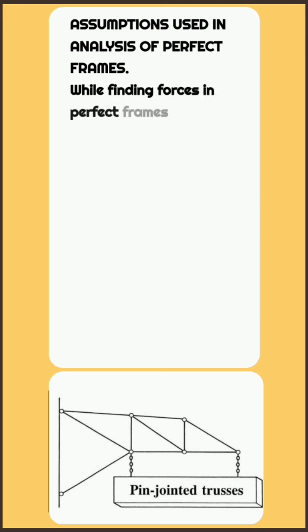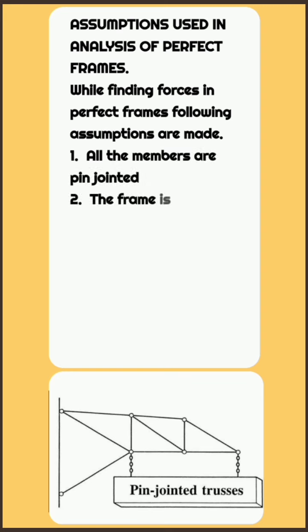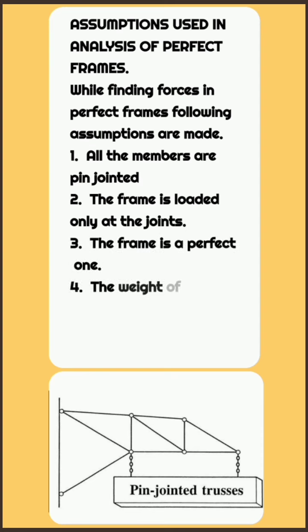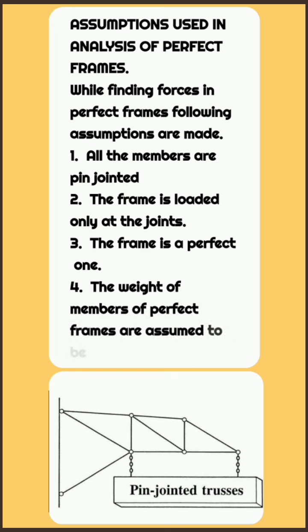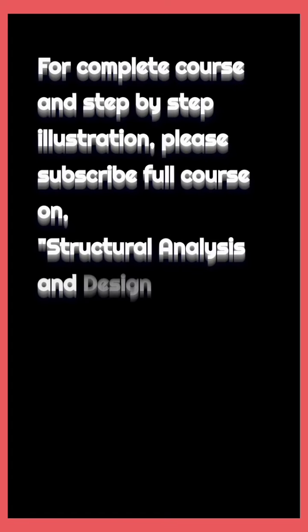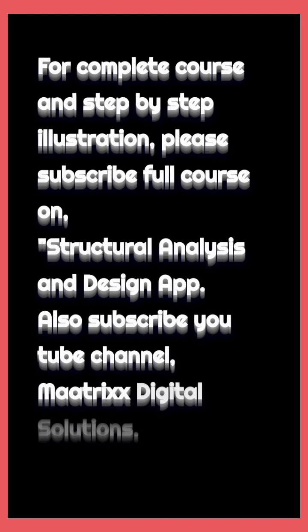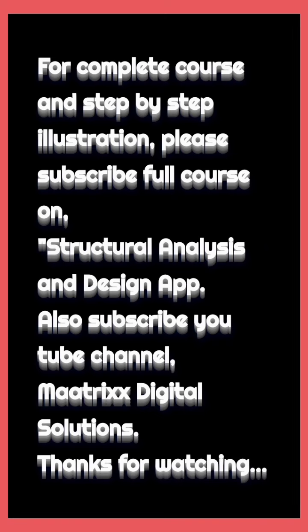Assumptions used in the analysis of perfect frames. While finding forces in perfect frames, the following assumptions are made: 1. All members are pin-jointed. 2. The frame is loaded only at the joints. 3. The frame is a perfect one. 4. The weight of members of perfect frames is assumed to be negligible.